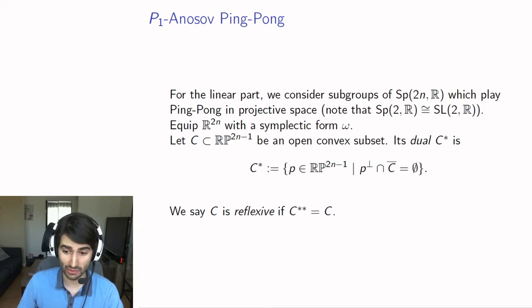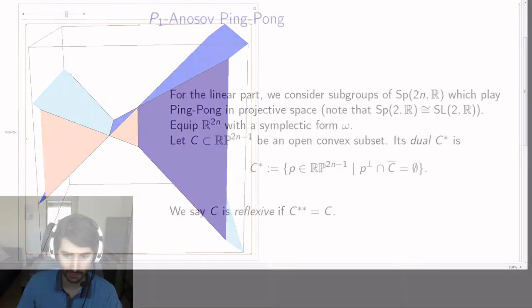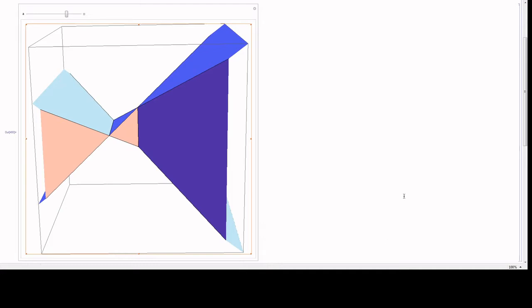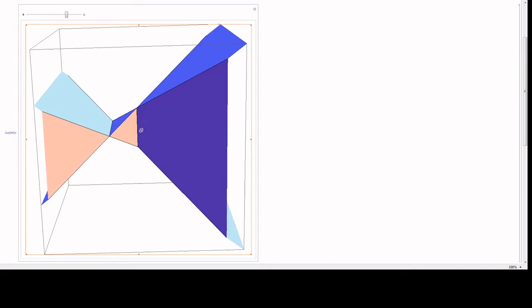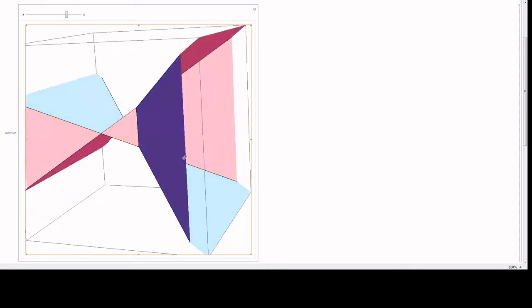An example of a set like this is given by just a simplex in projective space. This is a simplex in projective 3 space together with its dual. You think of the simplex in the middle—that's my convex set C.